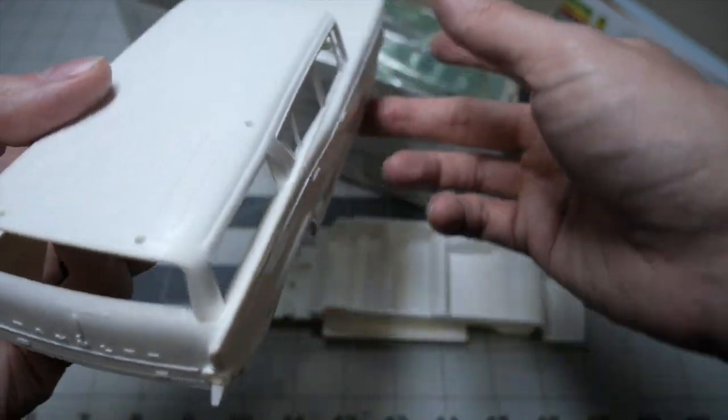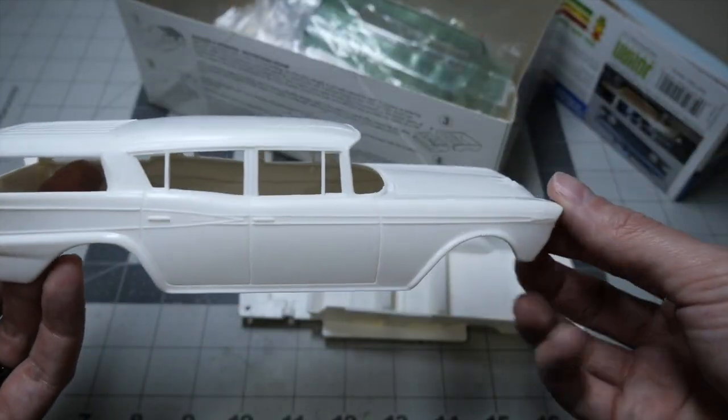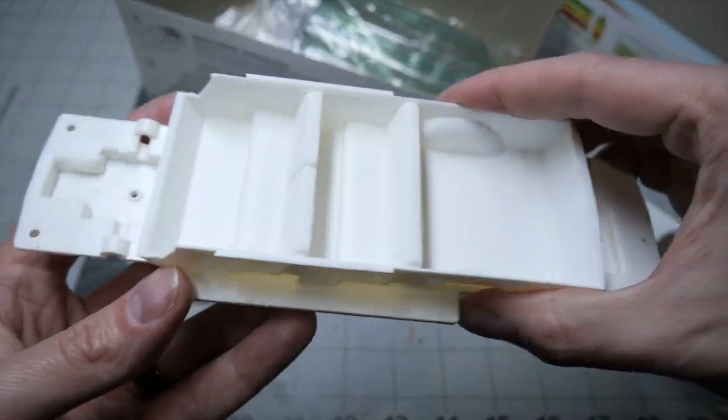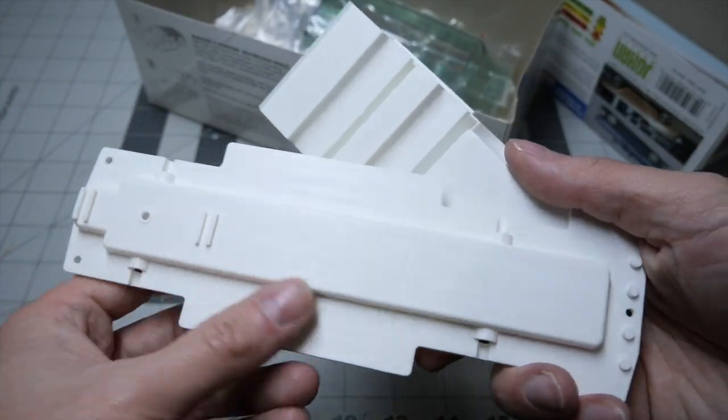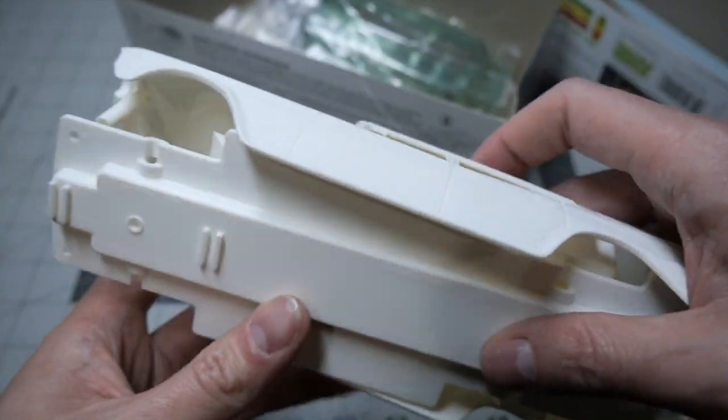Nicely molded, definitely got some mold lines to fix though. You've got the interior tub, basic skill level two Johan kit, curbside for sure.